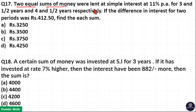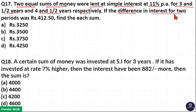Two equal sums of money were lent at simple interest at 11% per annum for 3.5 years and 4.5 years respectively. If the difference in interest for the two periods was rupees 412.5, find each sum.